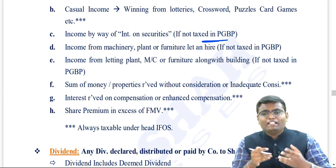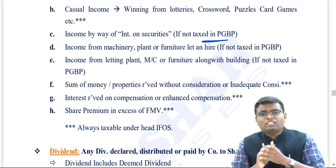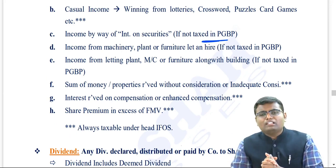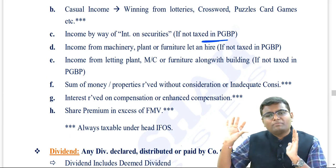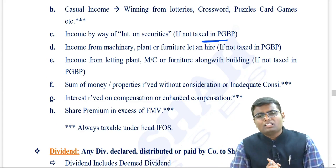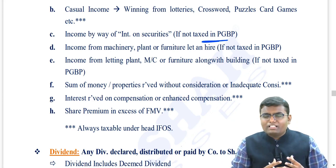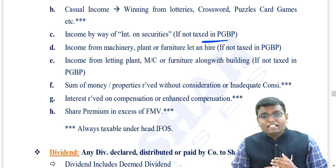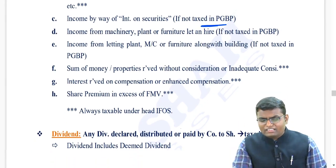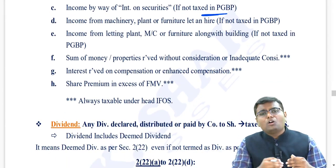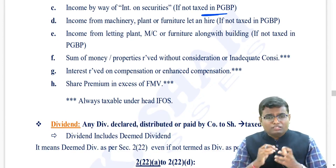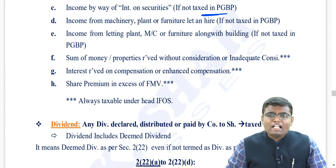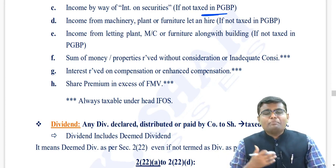Income from letting plant, machinery, furniture along with building - if you are renting a building along with machinery and plant, it is a composite rent. Whatever rent belongs to the house property is taxable under house property; whatever rent belongs to the other asset, if it is not your business, is taxable under IFOS. Then sum of money or property received either without consideration or with inadequate consideration - in short, gift income. Also interest received on compensation or enhanced compensation, and share premium in excess of fair market value.